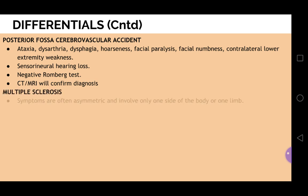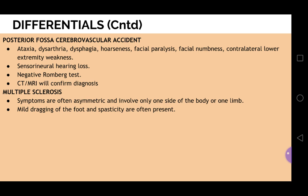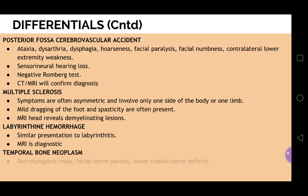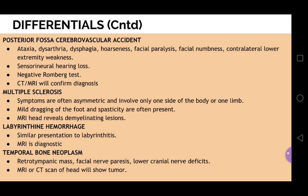Don't forget multiple sclerosis — symptoms are often asymmetric and involve only one side of the body or one limb. Mild dragging of the foot and spasticity are often present, and MRI reveals demyelinating lesions. Labyrinthine hemorrhage can also be a cause — presentation is similar to labyrinthitis and MRI is diagnostic. Lastly, temporal bone neoplasm: there is a retrotympanic mass, symptoms of facial nerve paresis or lower cranial nerve deficits, and MRI or CT scan of the head will show tumor.